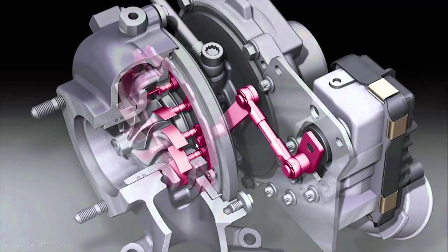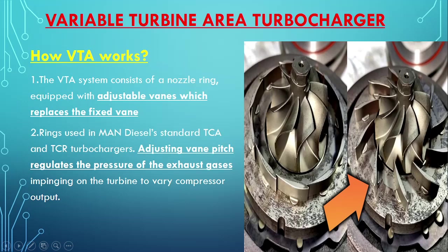This turbine area is controlled by a control ring fitted here. When we move this rod up and down it changes the turbine area. When the turbine area changes, the exhaust gas impingement on the blade changes. Basically, more rotation means if the turbine area is small, the exhaust gas moves with more pressure and impinges harder on the blade.